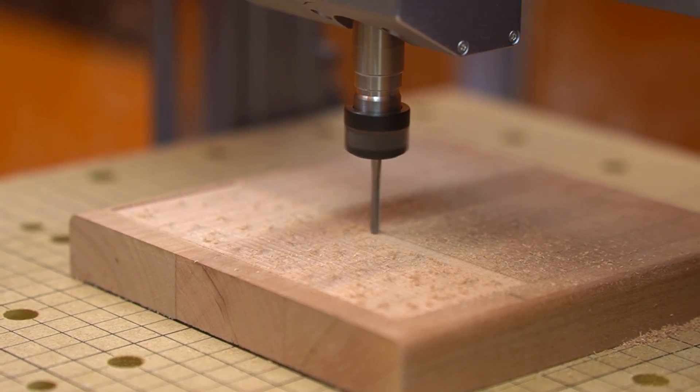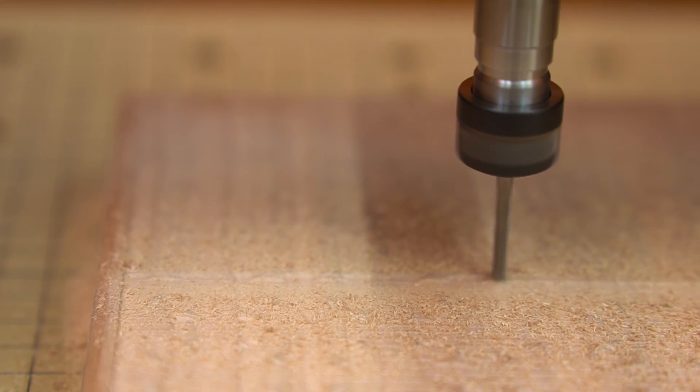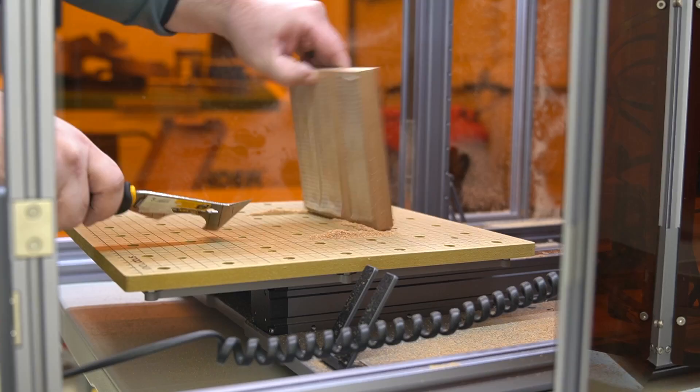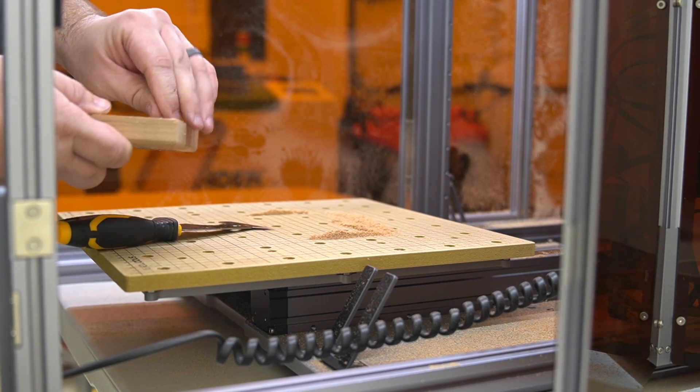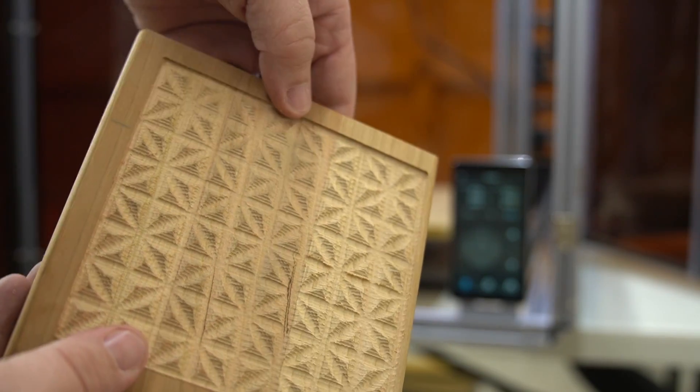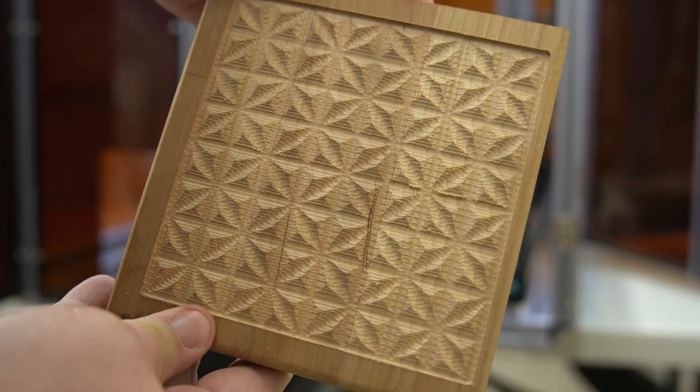Now, some much more expensive CNCs don't even have that feature. One thing to note is the bed size of 350 millimeters by 320 millimeters, equivalent to approximately 12.5 inches by 13.5 inches. You do have quite a bit of travel on the z-axis, which is 13 inches. So these dimensions will limit the size of projects you can make.